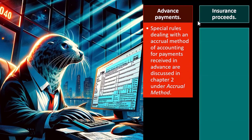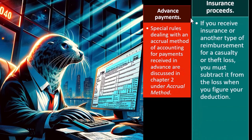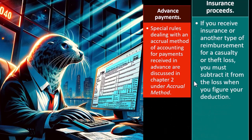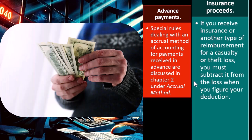Insurance proceeds: if you receive insurance or another type of reimbursement for a casualty or theft loss, you must subtract it from the loss when you figure your deduction. You have a loss, and then you get an insurance payment. It might seem like income since you got money from the insurance company, but the money is generally there to reimburse you for the loss. So if your building burned down, the insurance is going to recoup the loss — the insurance payment reduces the amount of the loss from the building burning down.